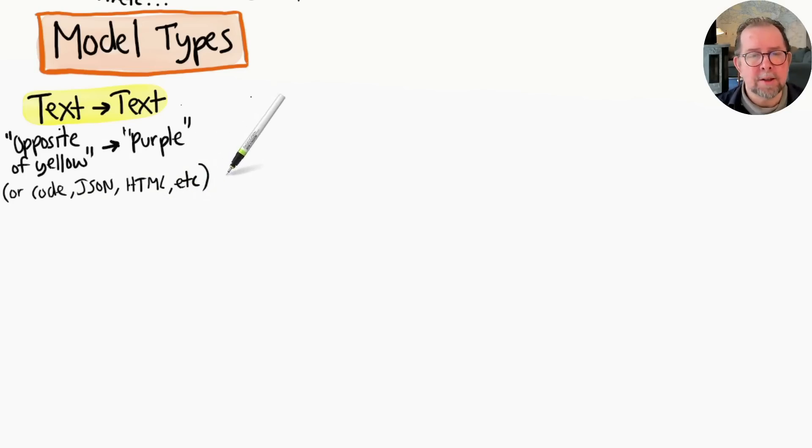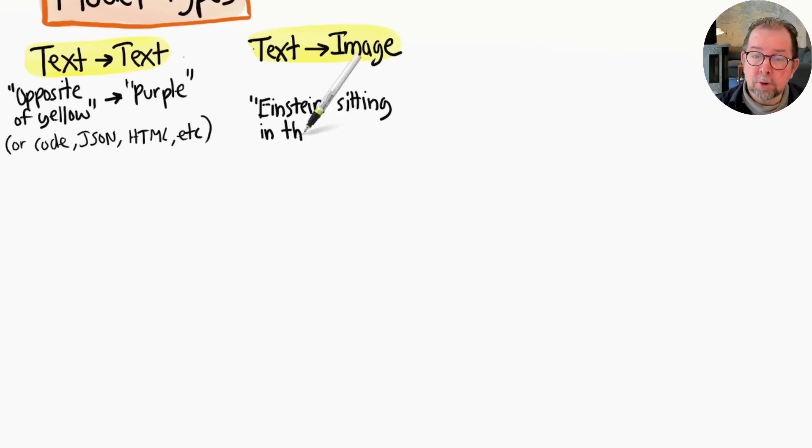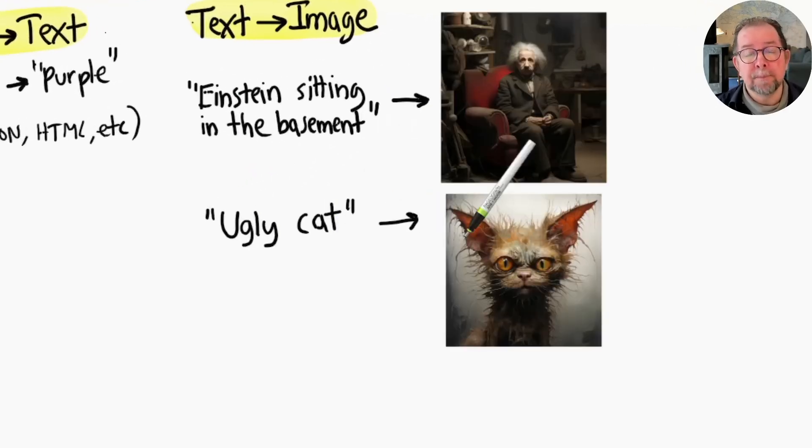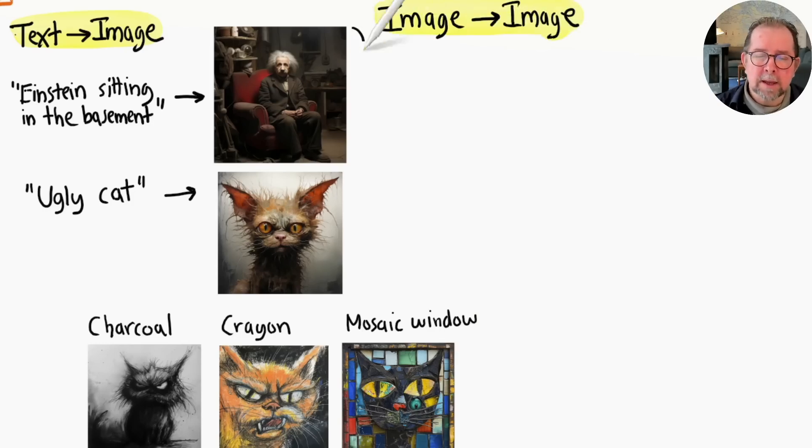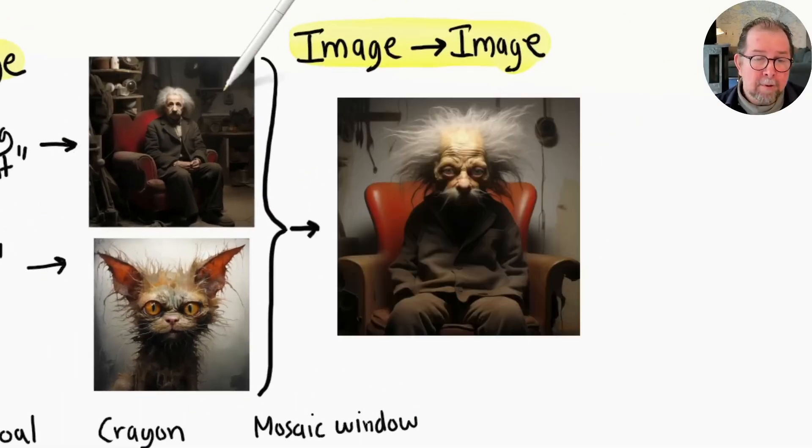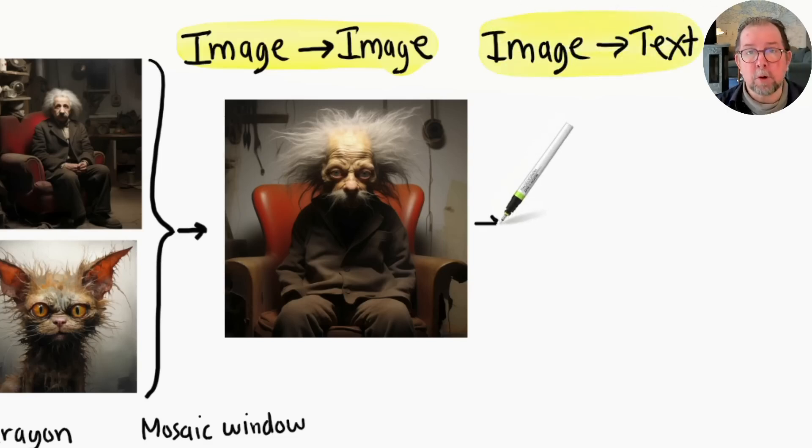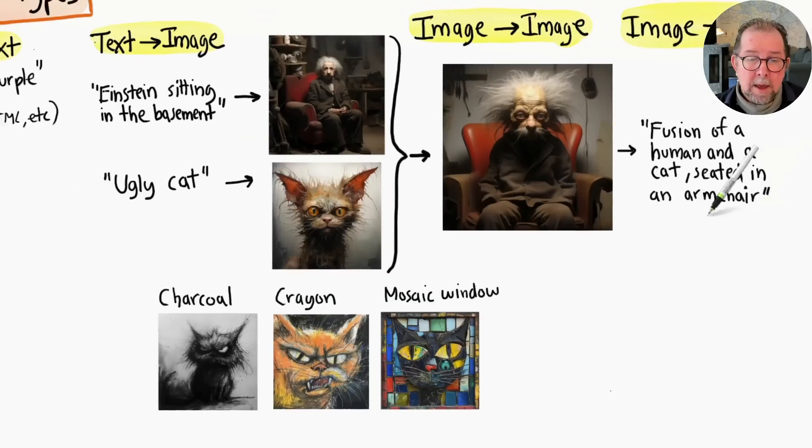Text-to-image models will generate images. Describe what you want and an image gets generated for you. You can even pick a style. Image-to-image models can do things like transforming or combining images. And we have image-to-text models which describe the contents of a given image.